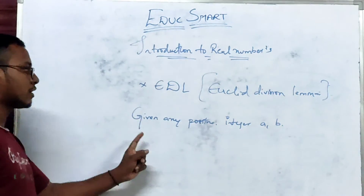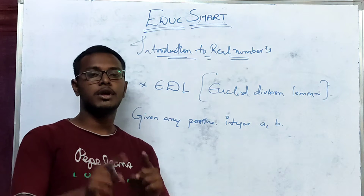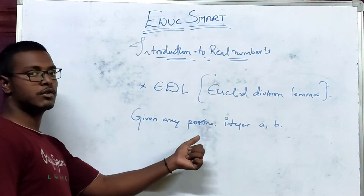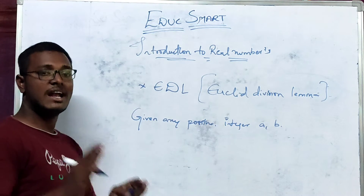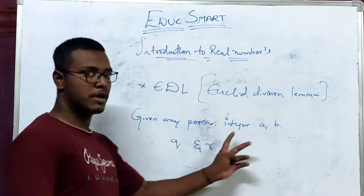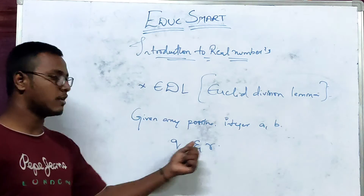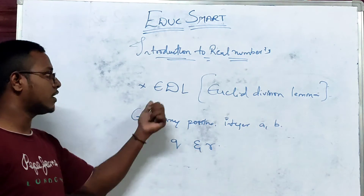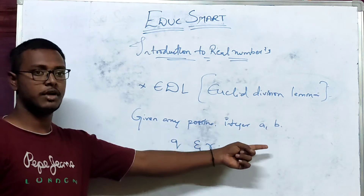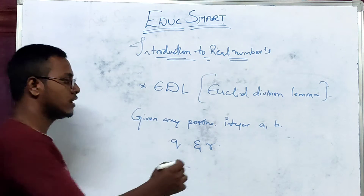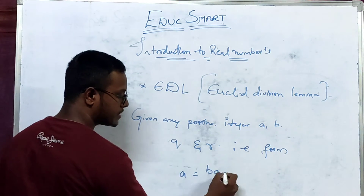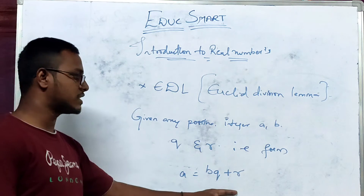So if we have any positive integers a and b, there will be existing q and r. That should be in the form of a equals bq plus r. So the format is a equals bq plus r.